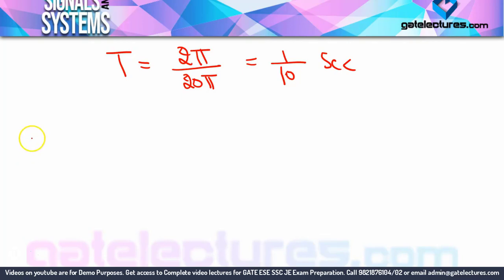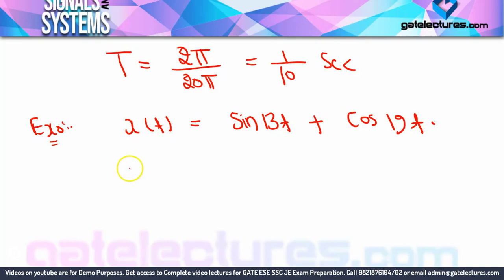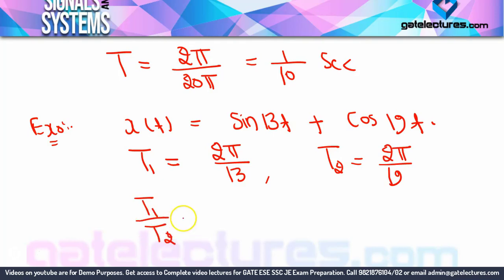Next example: x(t) = sin(13t) + cos(19t). Using Method 1: T1 = 2π/13, T2 = 2π/19. T1/T2 = (2π/13) ÷ (2π/19) = 19/13. The 2π terms cancel, giving 19/13, which is obviously a rational number.